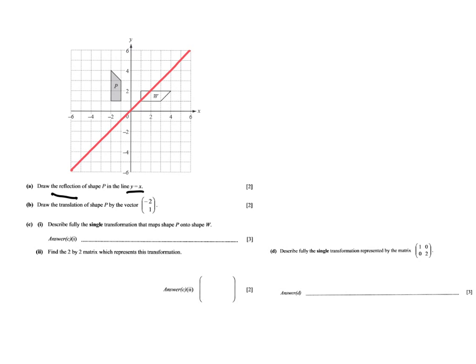I'm going to take it vertex by vertex. I always go horizontally first — two steps horizontally to the line of reflection. Because it's diagonal, I then go two steps down to find the image vertex, so I put that point there. I could also have chosen to go two steps down first and then two steps horizontally, or go perpendicular — just as long as you do it consistently. I always do two steps horizontally and then two steps down.